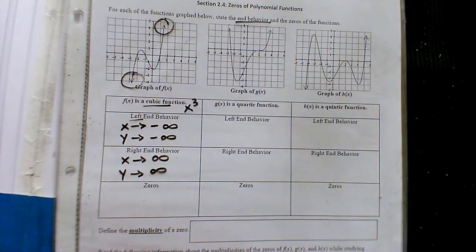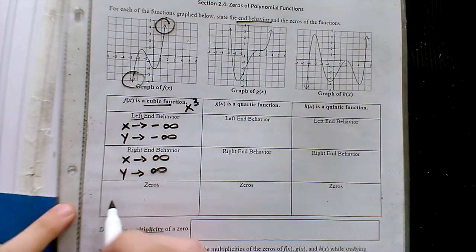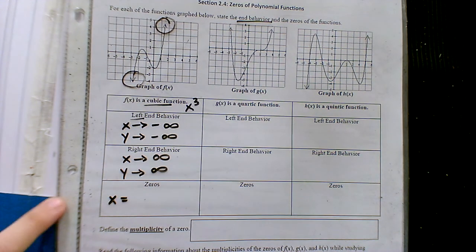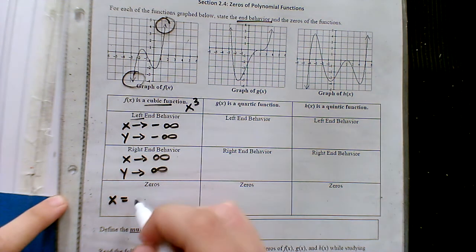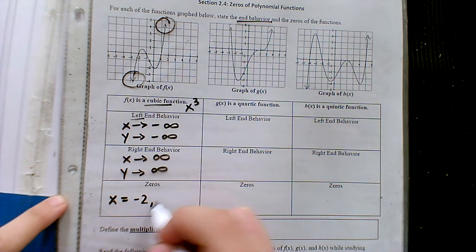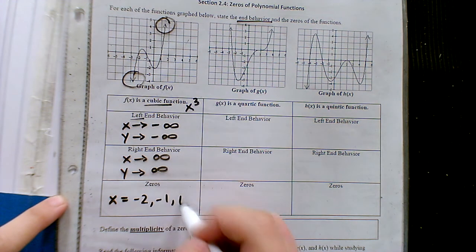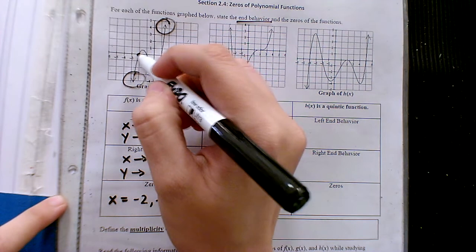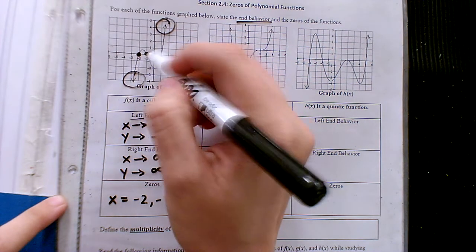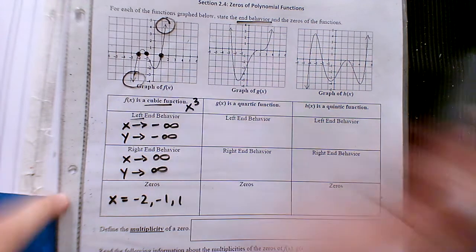Just for practice, can we find the zeros or x-intercepts of that graph? Good, Eli — negative one and one.